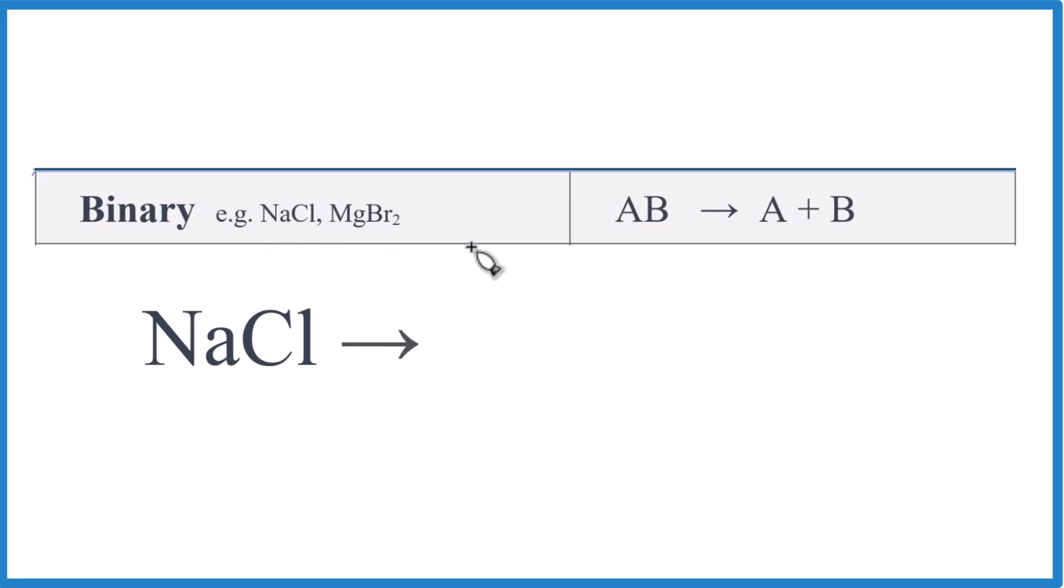No polyatomic ions. And the pattern is, in this case, A would be sodium, B is chlorine, they break apart, and we're going to get Na and Cl.